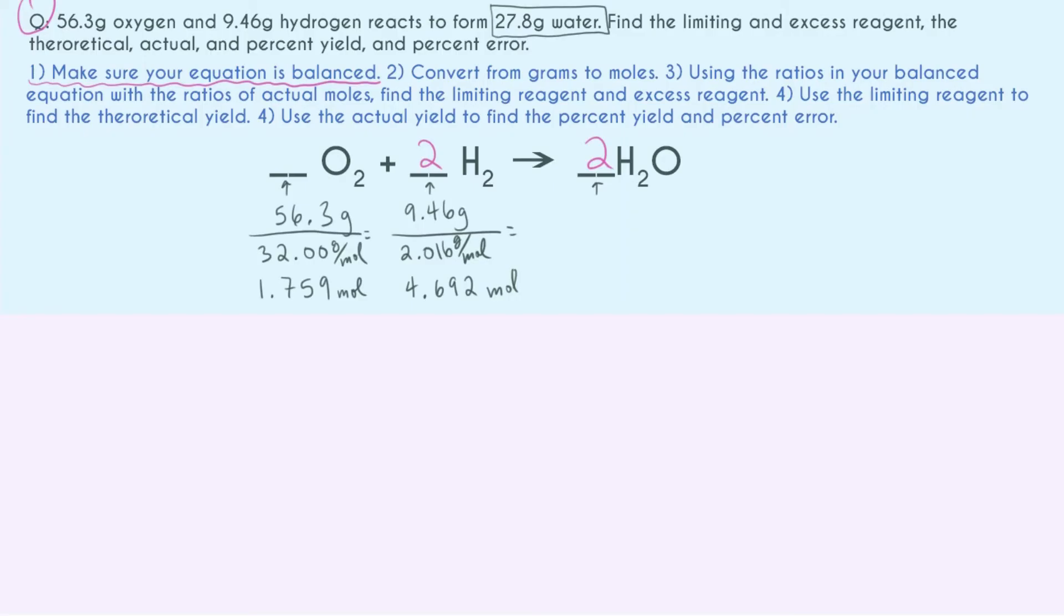One is to just pick one reactant randomly and say, how much would this reactant need of the other reactant to be completely reacted? In this case, we know that the ratio between oxygen and hydrogen is one to two. So if we have one mole of O2, we're going to need two moles of H2. And so we don't actually have one mole of O2.